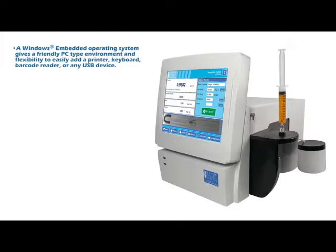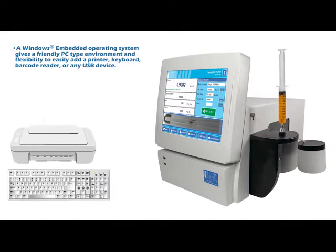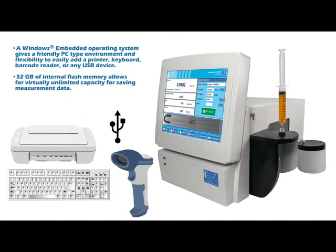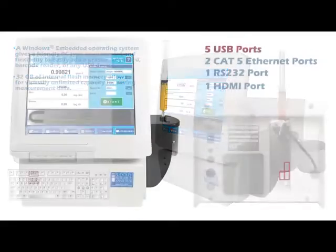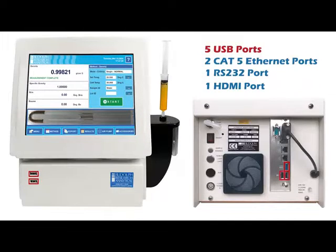The Rudolph density meter uses modern software and offers the technology needed in today's modern lab. A Windows-embedded operating system gives a friendly PC-type environment and flexibility to easily add a printer, keyboard, barcode reader, or any USB device. 32 GB of internal flash memory allows for virtually unlimited capacity for saving measurement data. Five USB ports, two Cat5 Ethernet ports, one RS-232 port, and one HDMI port.